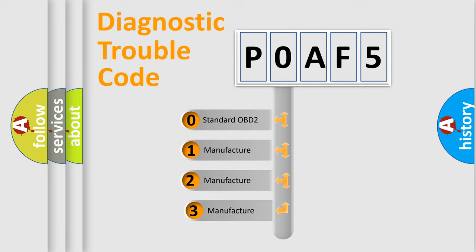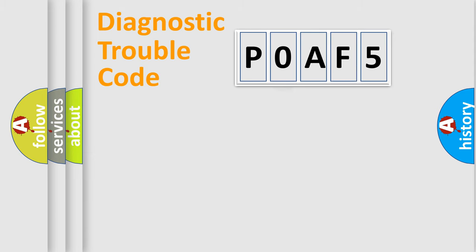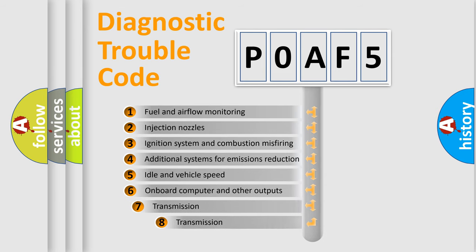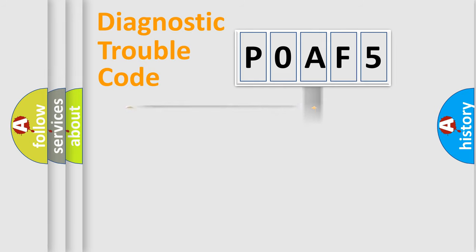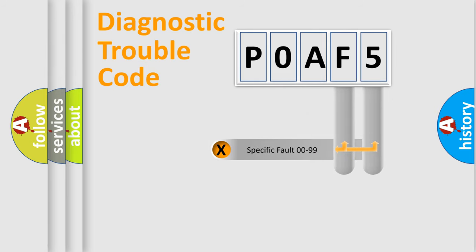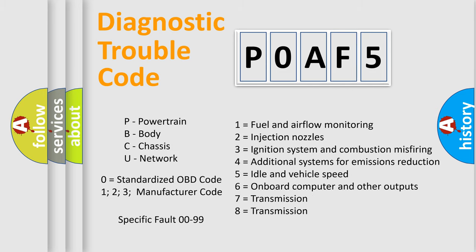If the second character is expressed as zero, it is a standardized error. In the case of numbers 1, 2, or 3, it is a more specific expression of the car-specific error. The third character specifies a subset of errors. The distribution shown is valid only for the standardized DTC code. Only the last two characters define the specific fault of the group. Let's not forget that such a division is valid only if the second character code is expressed by the number zero.